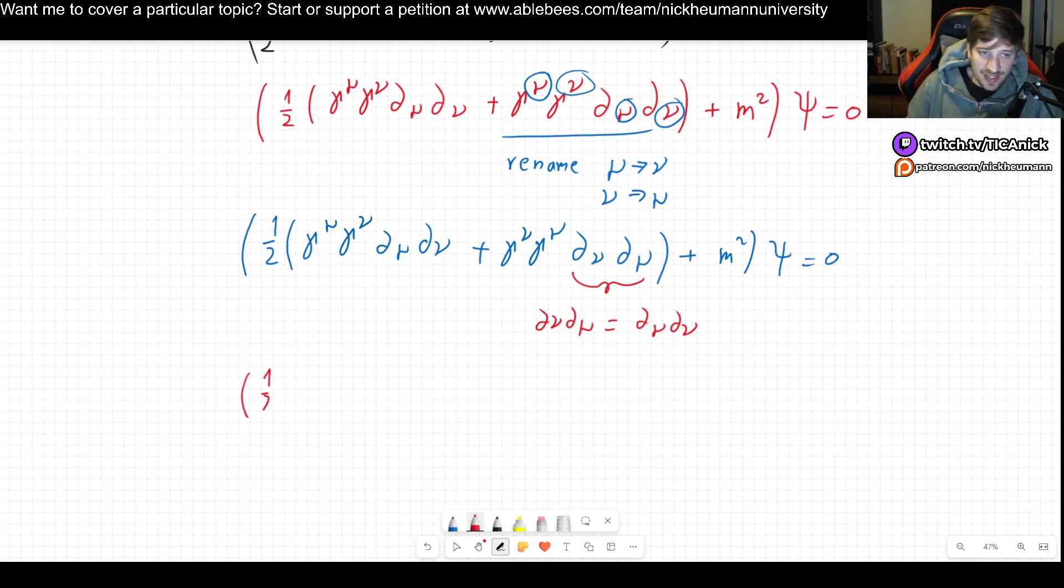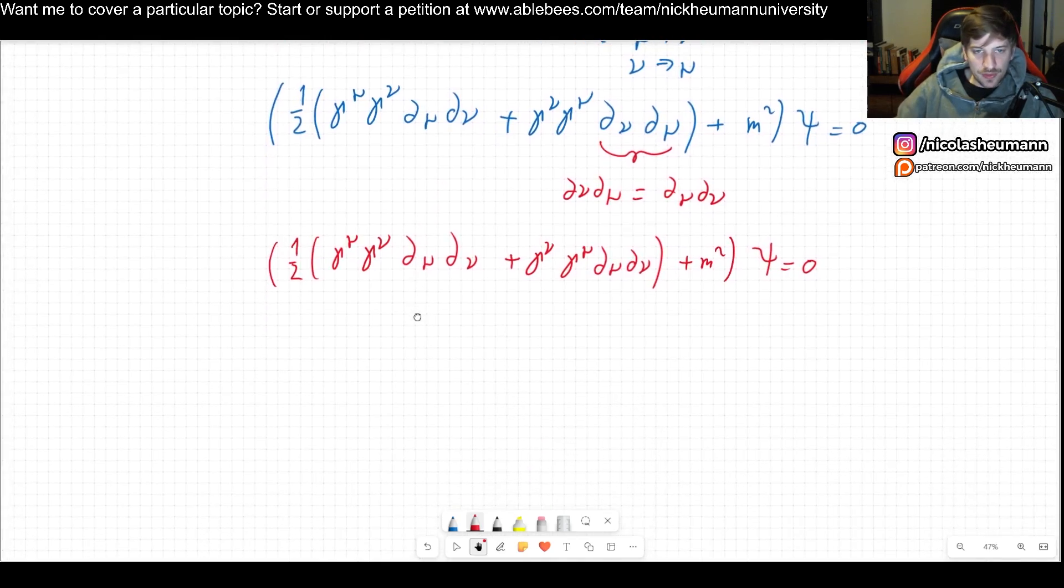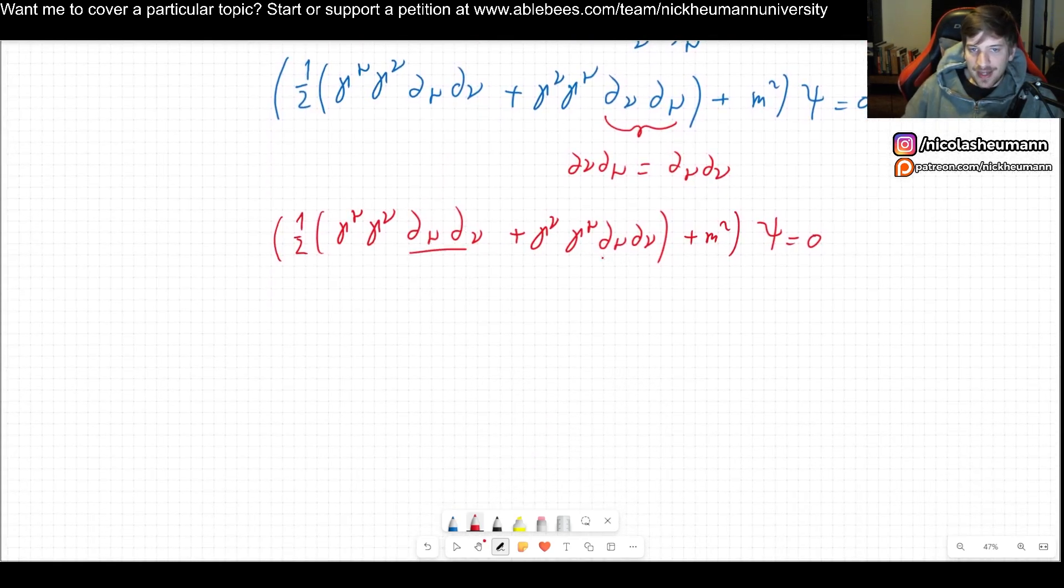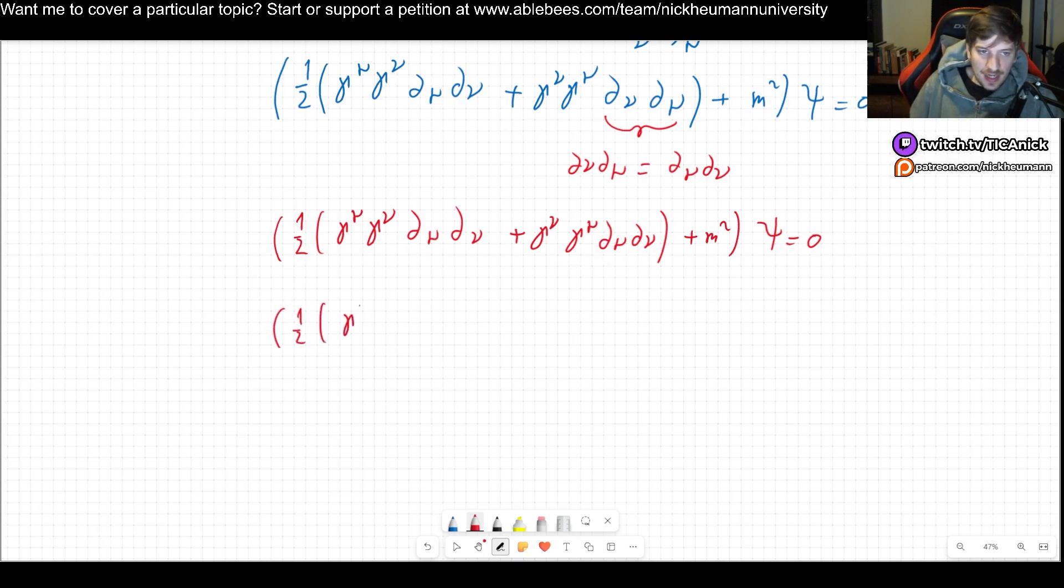One half gamma mu gamma nu del mu del nu plus gamma nu gamma mu and now I have del mu del nu plus et cetera, right? So now what I will do is that I will factor out my partial derivatives.